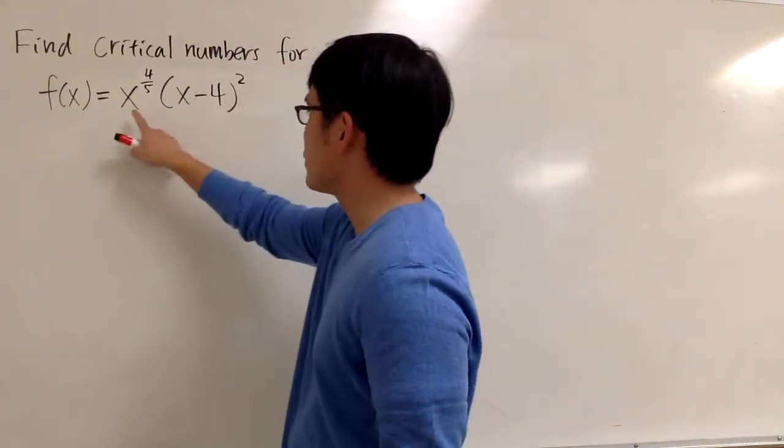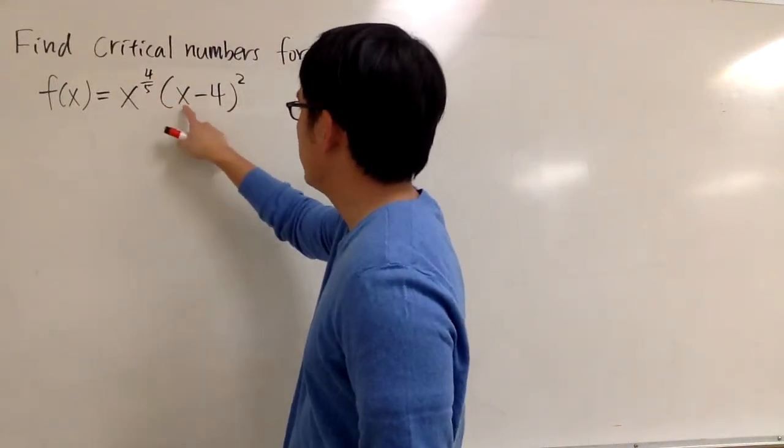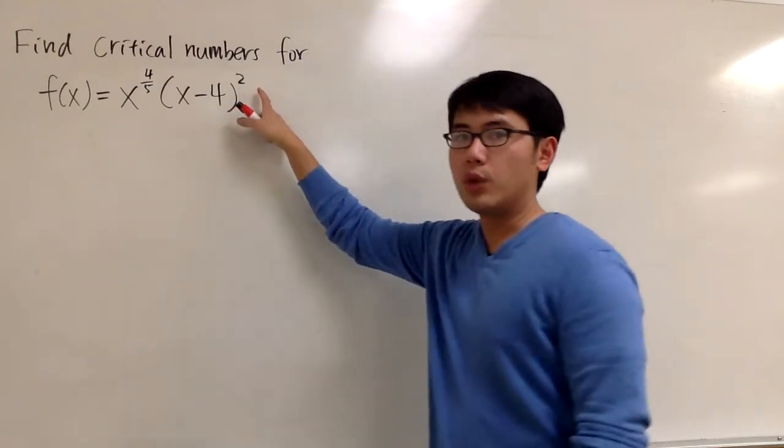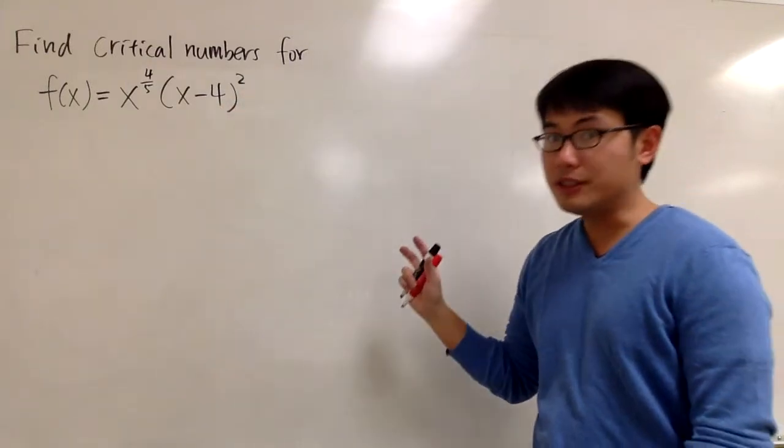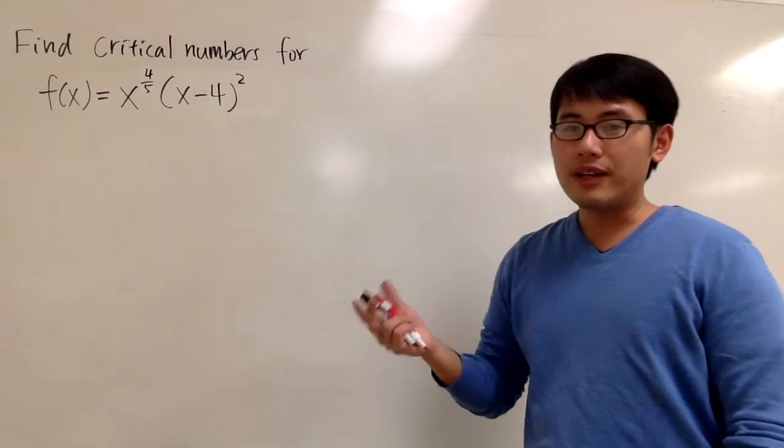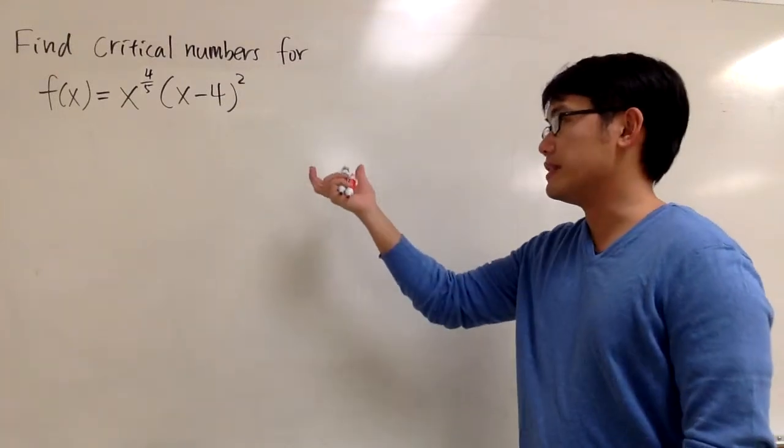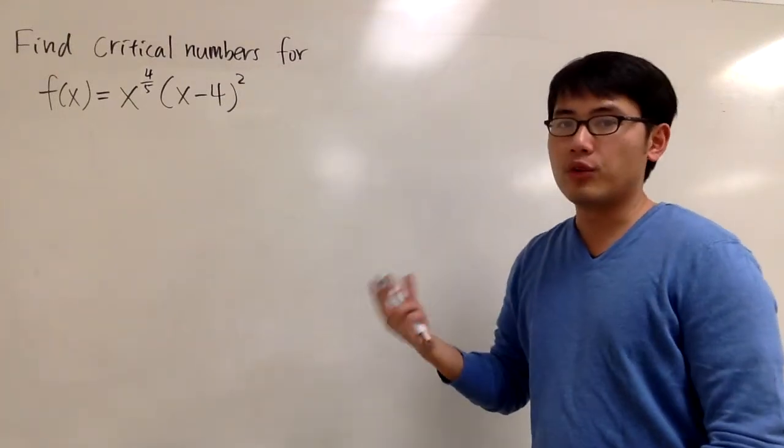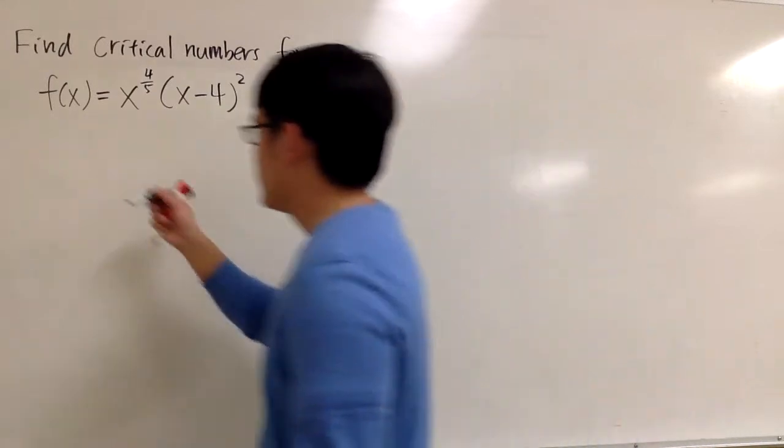Let's find all the critical numbers for the function x to the 4/5 times (x minus 4) to the second power. We have to get its first derivative first, and then try to find out where the first derivative is equal to 0, and also find out where the derivative doesn't exist. Let's get to work.